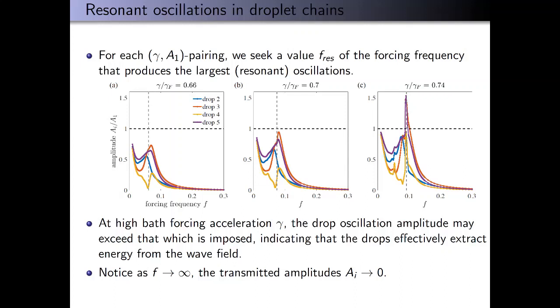In the case of high gamma, gamma equals 0.74, we can actually get oscillation amplitudes of the other four drops that exceeds the imposed amplitude on drop one. This shows that the drops effectively extract energy from the wave field.